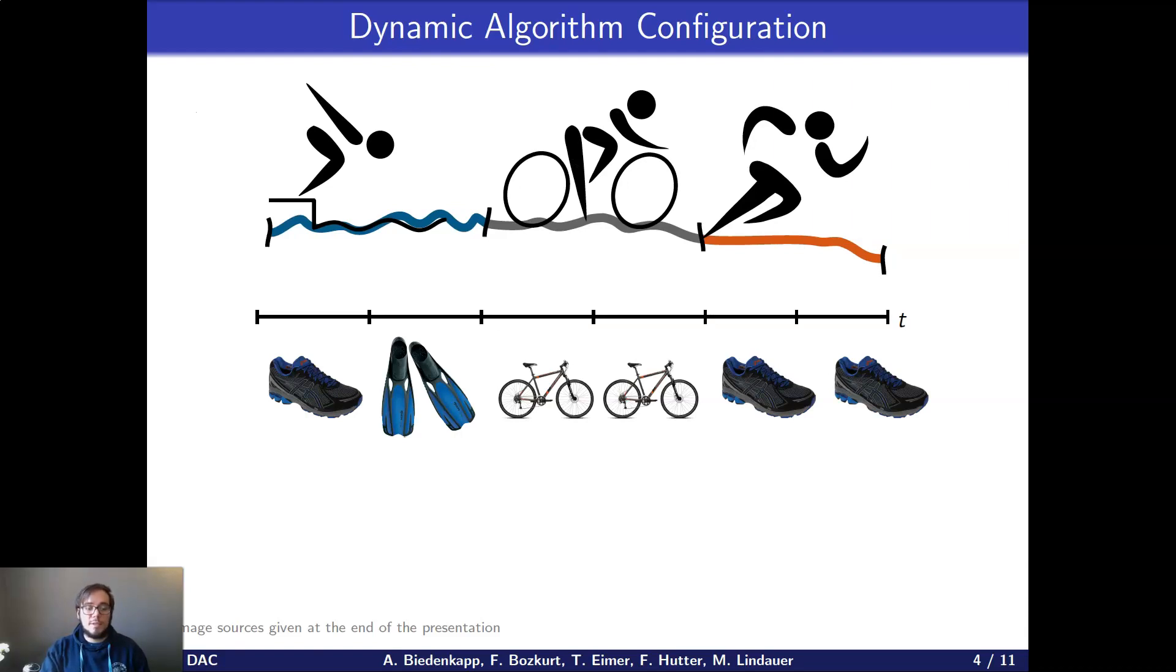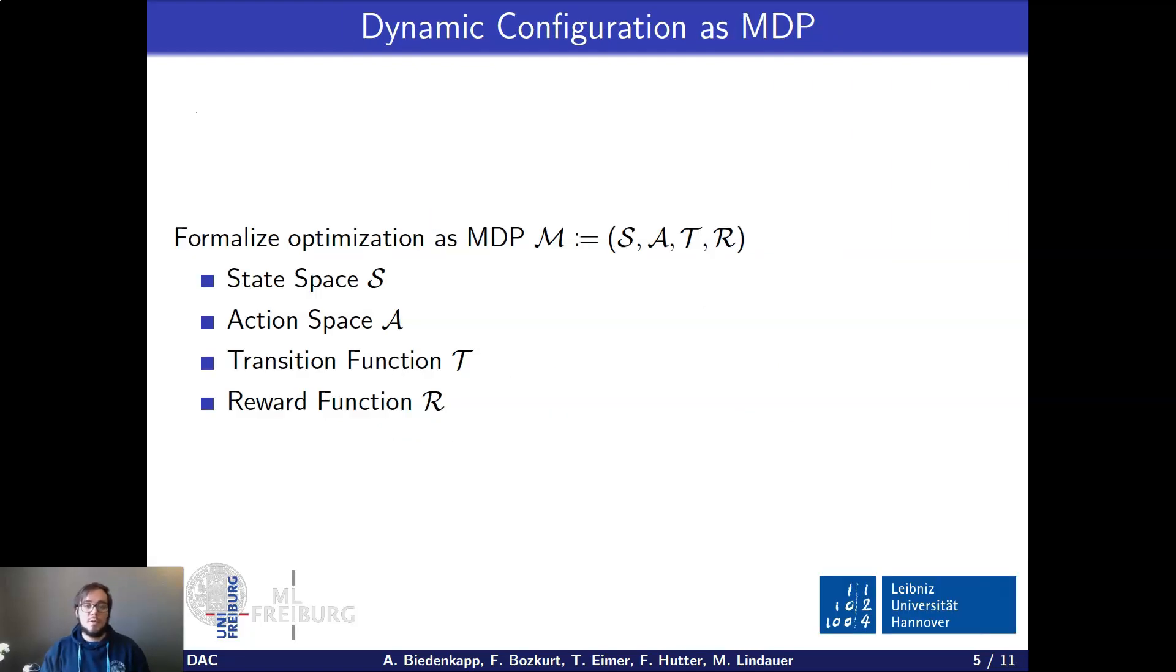And in the simple example, you can see this is much better than just always taking the same parameter value. And what is crucial here is that we need to go away from the view of an algorithm as a black box and view it more as a white box. And if we do that, this allows us to formalize the optimization as an MDP.